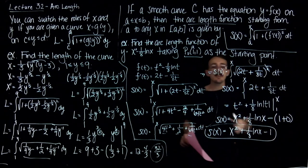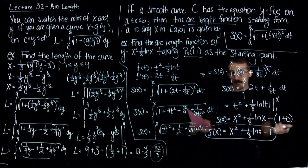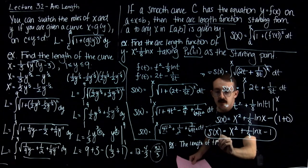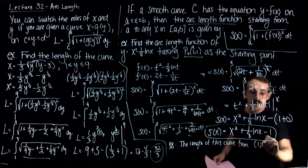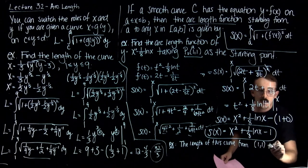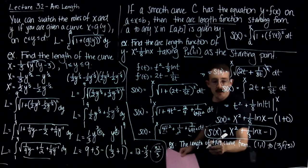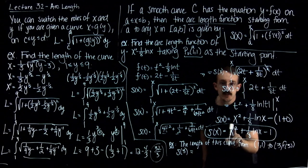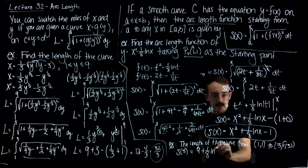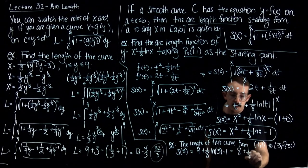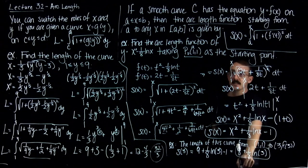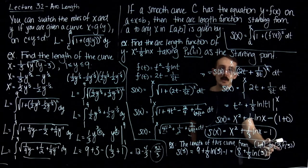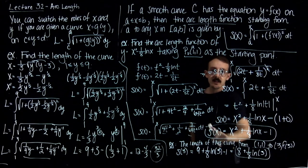This function tells you the arc length for any x you plug in. For example, the length of this curve from (1,1) to when x equals 3: you just plug 3 into the function. You get 9 plus 1/8 ln of 3 minus 1, which is 8 plus 1/8 ln of 3. That is the distance on this curve between x equals 1 and x equals 3. If you want from 1 to 4 or 1 to 10, you just plug that number into the function.